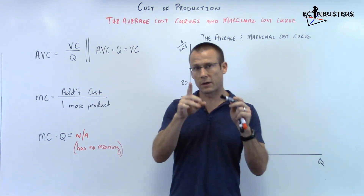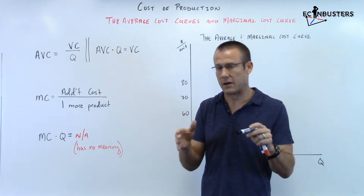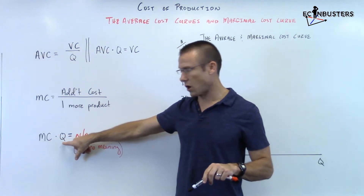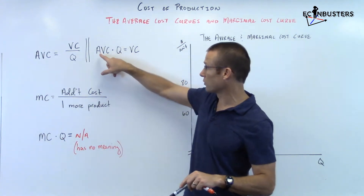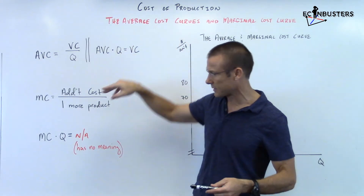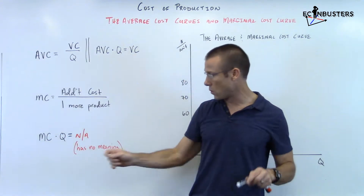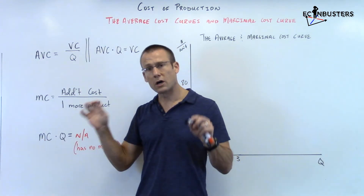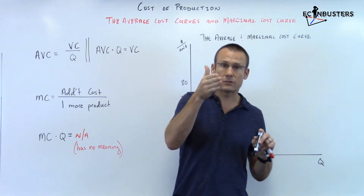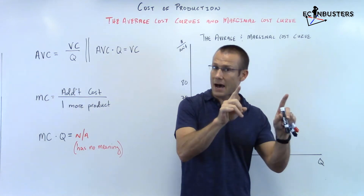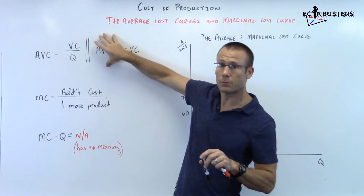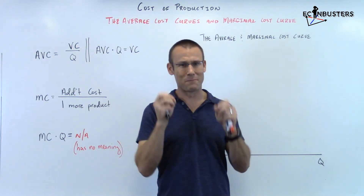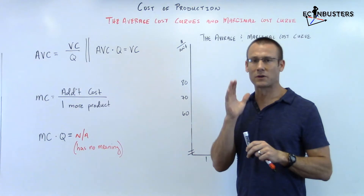Here's a key takeaway: you will never see 'marginal cost times quantity' written in economics. You will see average variable cost times quantity — that's the variable cost. But marginal cost times quantity has no meaning and is not applicable, because marginal cost is specific for each unit of output. It is not dependent on how much you produce like average variable cost. If you've stayed with me this far, stay with me, because we're going to go even further.